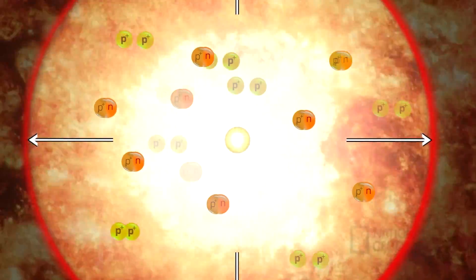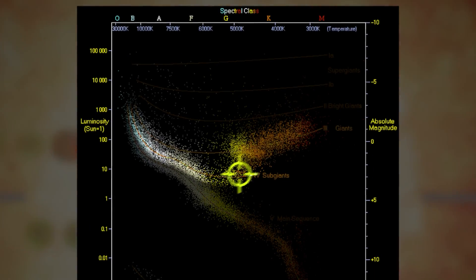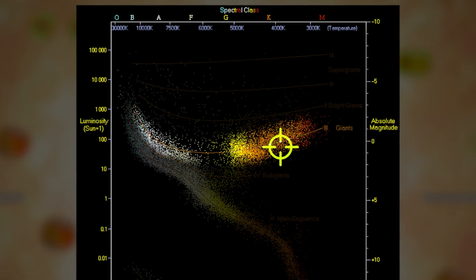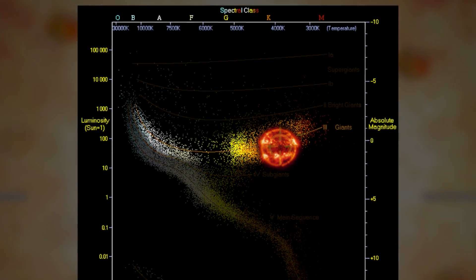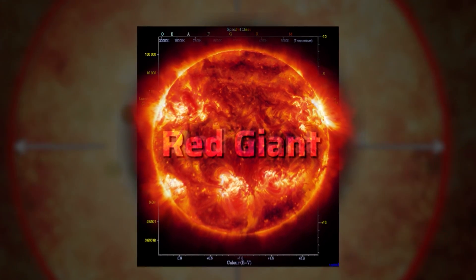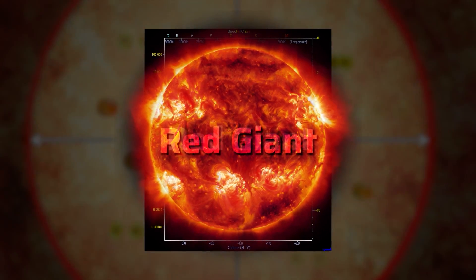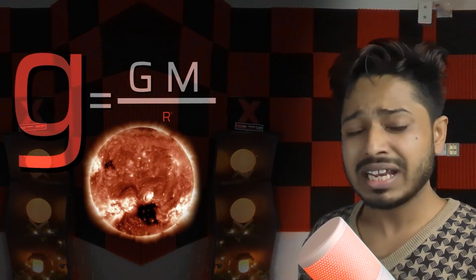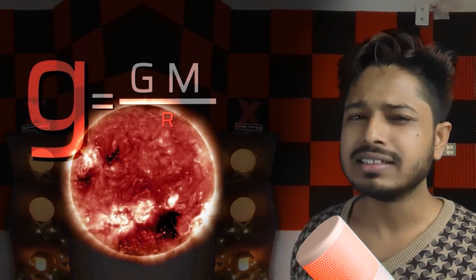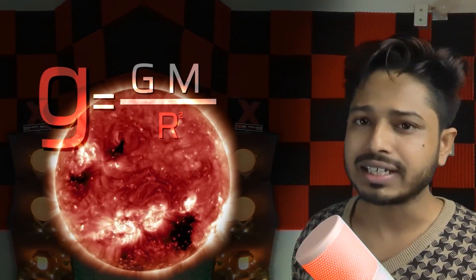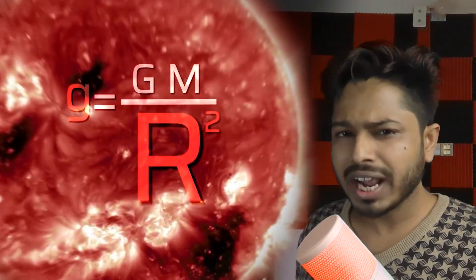And finally, the HR diagram shifts to the upper right segment. Ladies and gentlemen, a red giant star is born. Red giant is pretty much self-explanatory — it will appear red and it will be a giant in size. That's why: red giant.